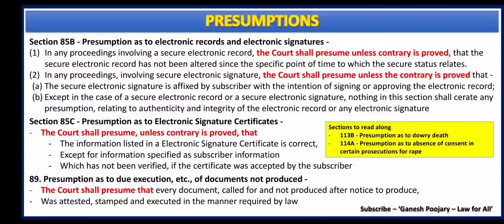Section 89 discusses about presumption as to due execution of documents not produced. Here, the court has called for a particular document and has given a notice to produce such document. But even after such notice, the document is not produced in front of the court. In that case, the court shall presume that the same has been attested, stamped, and executed in the manner required by law.